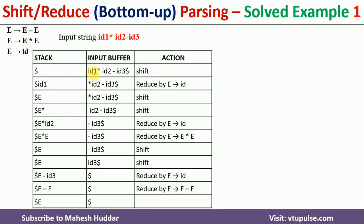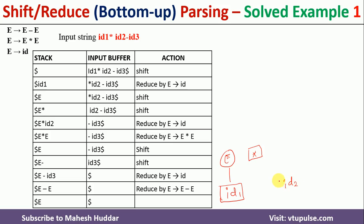For the parse tree: id1 is the first token shifted onto the stack, so I create a terminal node (square box) for id1. Since id1 was reduced to e, I create a non-terminal node (circle) for e above it. Then star is shifted — a terminal node is created for star. Next id2 is shifted, reduced to e, so another non-terminal node e is created. Since e * e reduces to e, I create an internal node e as the parent of those three nodes.